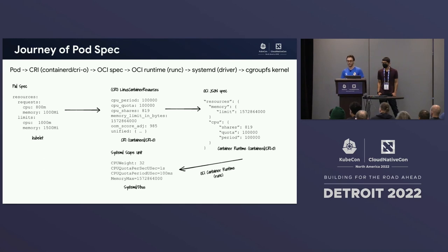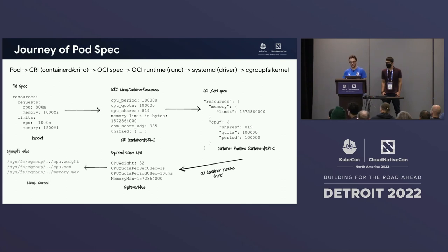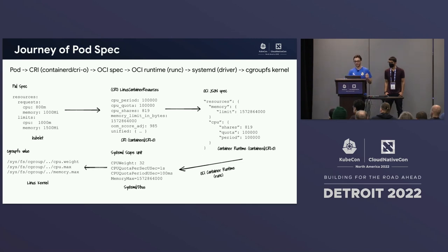Depending on the cgroup driver in use — and if using cgroup V2 you should use the systemd cgroup driver — the OCI container runtime RunC will talk to systemd to create a systemd scope unit. Systemd has understanding of CPU, memory, and other resource control properties. RunC and systemd both talk to cgroupfs on the Linux kernel to finally set the actual values. That's how we get from the pod spec to cgroupfs.